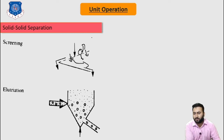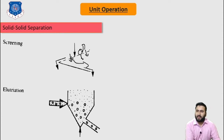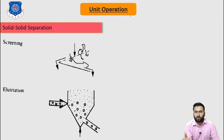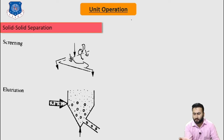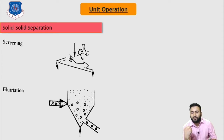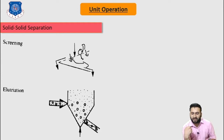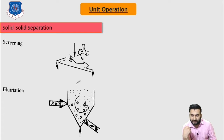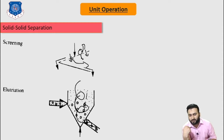The second method is elutriation, which may be used to remove fines from solids by passing gas to achieve fluidized transportation of fine particles. Due to the cyclone shape, larger particles are transported from the discharge line because of centrifugal force, flowing along the wall and exiting through the discharge line, while small particles are collected from the upper side.